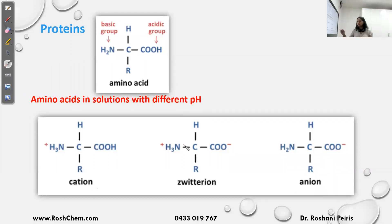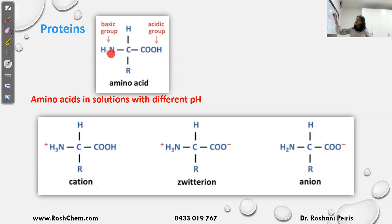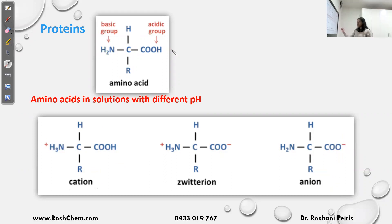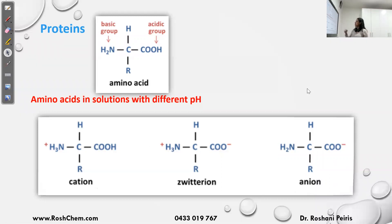The cation form or plus form exists at low pHs or in acidic solutions. If the solution is acidic, the NH2 group can take H plus to become NH3 plus. And we have the anion form or negative form at high pHs or in alkaline solution, where the COOH groups remove H plus to make COO minus. So those are the three forms of amino acids existing in different solutions depending on pH.